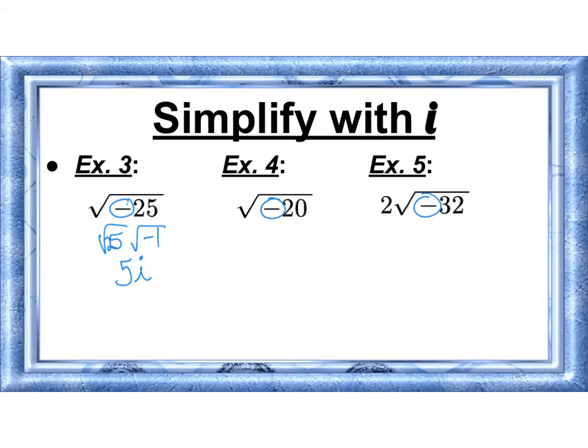Square root of negative 20 isn't a perfect square, but we can do the square root of 4 times the square root of negative 1 times the square root of 5 because 5 times negative 1 times 4 is negative 20. So this becomes 2i root 5.